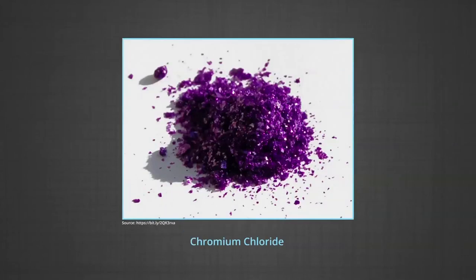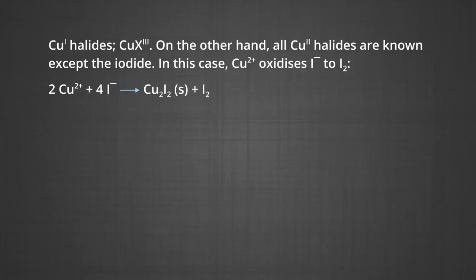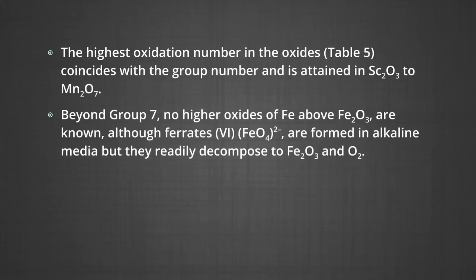The figures show the structures of vanadium tetrachloride and chromium chloride. All Cu2+ halides are known except the iodide, because the cupric ion oxidizes iodide to iodine. The ability of oxygen to stabilize the highest oxidation state is demonstrated in the oxides, where the highest oxidation number coincides with the group number, attained from scandium oxide to manganese heptoxide.